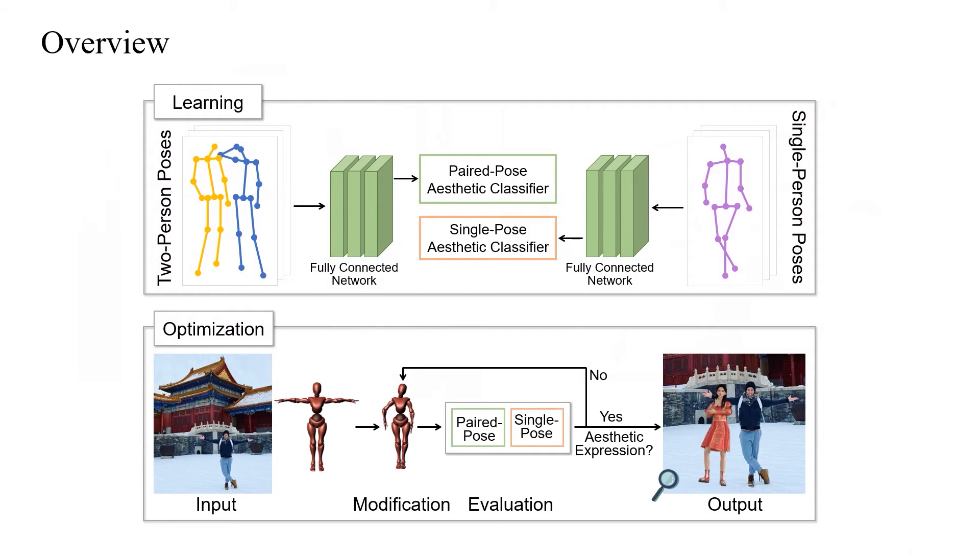In this paper, we propose a novel optimization-based approach consisting of two stages. In the learning stage, the collected datasets are pre-processed to extract the pose feature vectors, which are fed into the fully connected networks. The two trained classifiers are used to evaluate the aesthetic level of one pose.